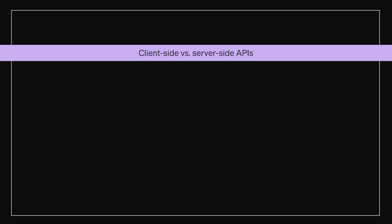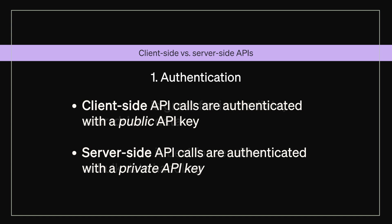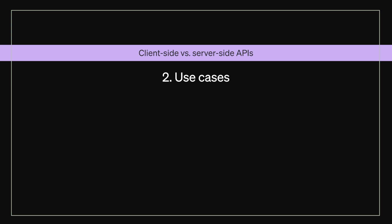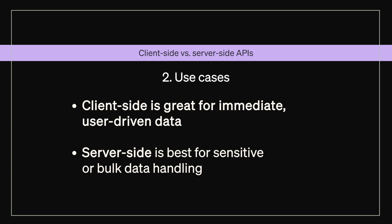Here's a quick recap of the two main differences between client and server-side API calls. First, authentication: client-side API calls are authenticated with a public API key, while server-side API calls are authenticated with a private API key. Second, use cases: client-side is great for immediate, user-driven data, while server-side is best for sensitive or bulk data handling.